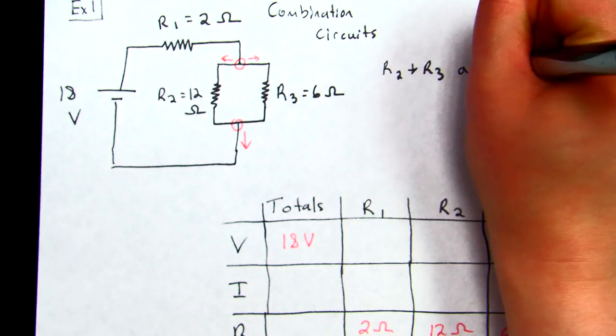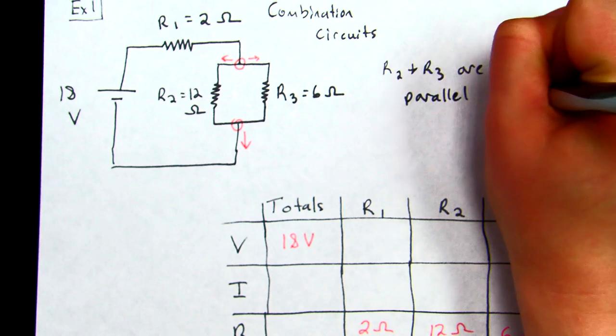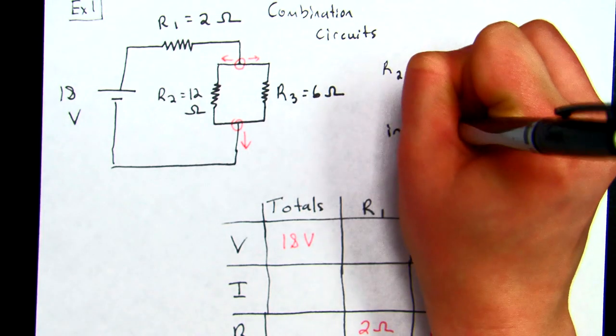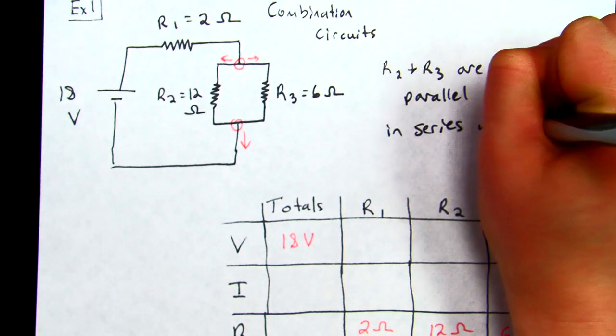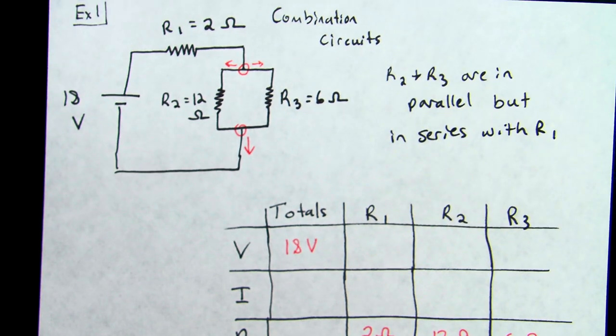That is in series with R1. So R2 and R3 are in parallel, but in series with R1. So anytime you're given all three resistors, the best thing to do first is to find your equivalent resistance.